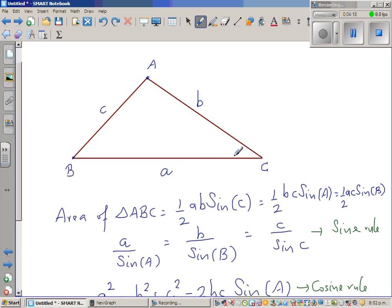It is half of the product of two sides and the angle included between the two sides. So angle C is included or made by A and B or it is half BC sine A or half AC sine B. This is area of a triangle of a non-right angle triangle.